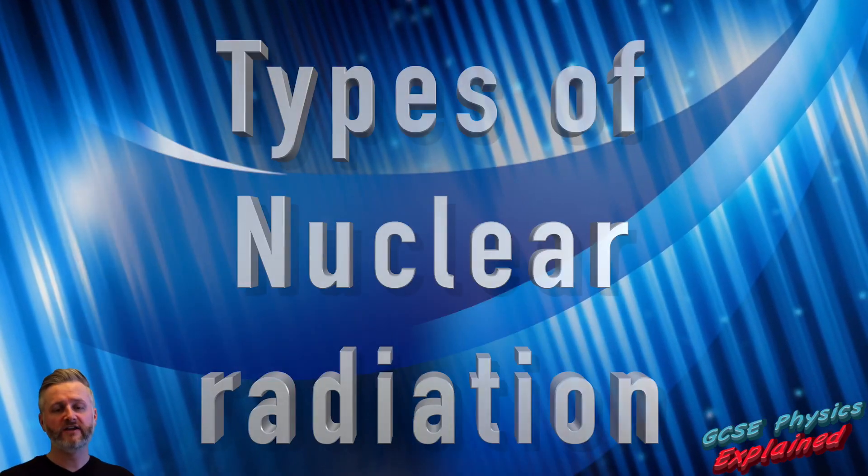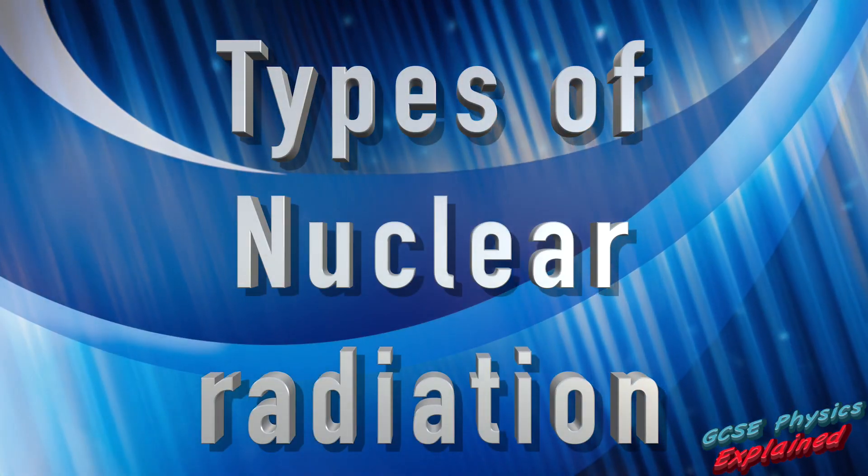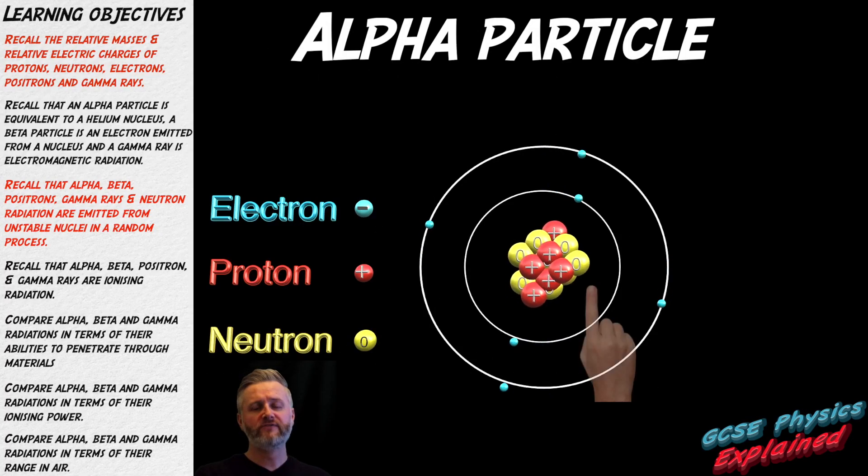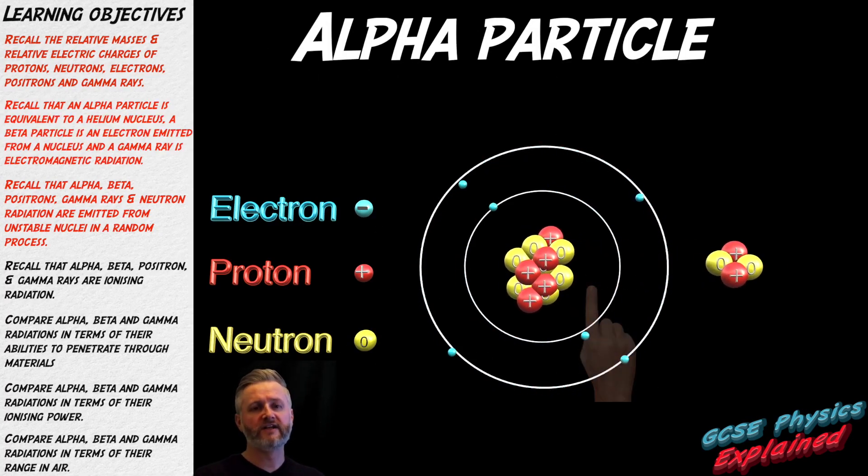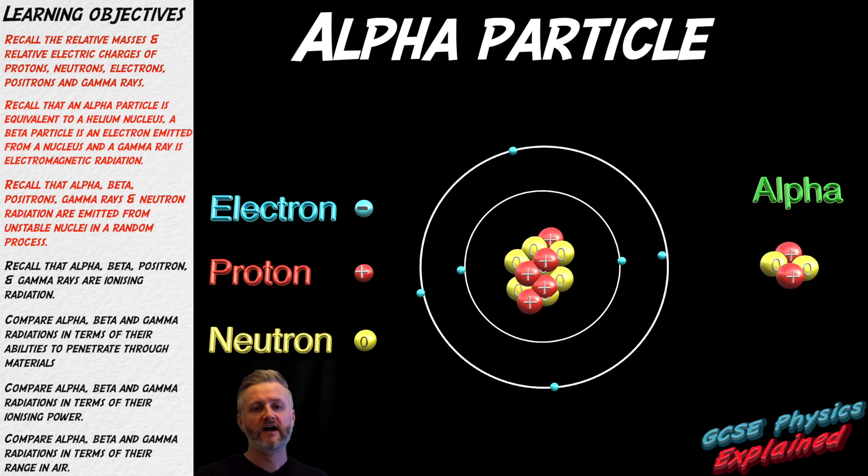Types of nuclear radiation. Alpha radiation is a particle that's ejected from the nucleus and consists of two protons and two neutrons. It is the same as a helium nucleus. It has a relative mass of four and a relative charge of plus two.